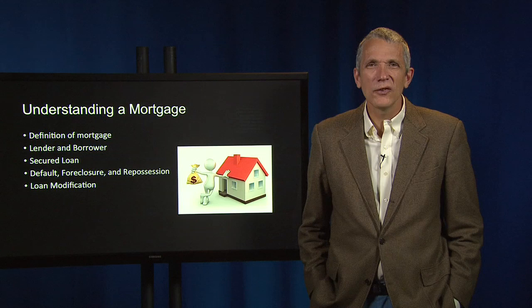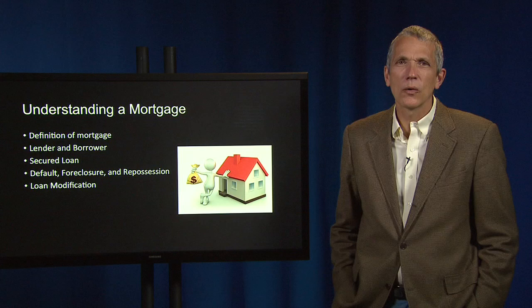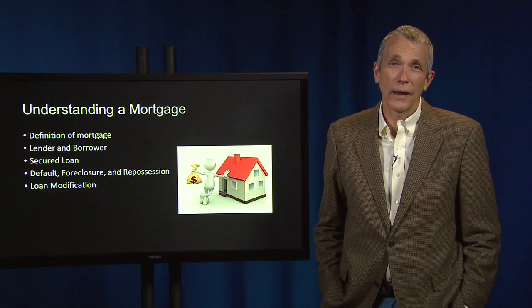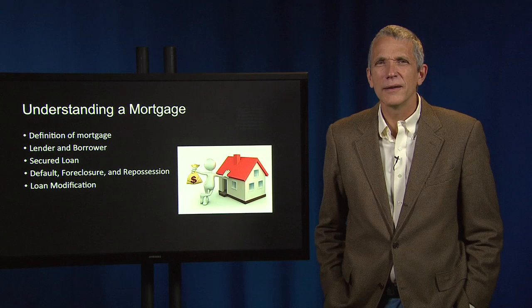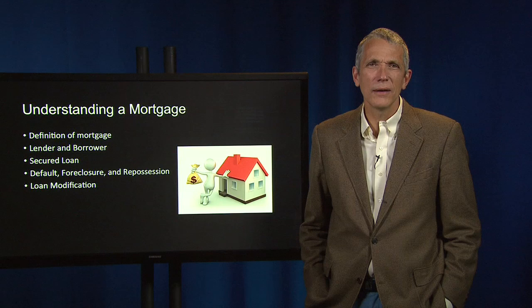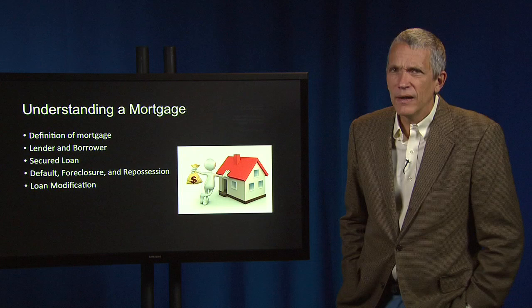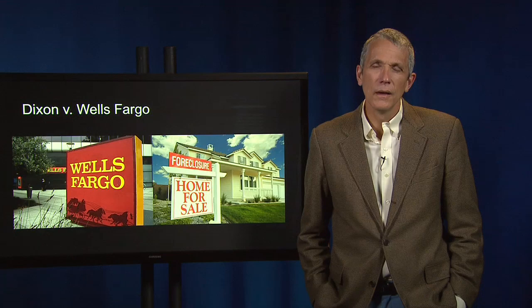When functioning properly, mortgages are essential to the well-being of the economy and the real estate market. However, things sometimes go awry. During the subprime mortgage crisis, which contributed to the U.S. and world recession from 2007 through 2009, a large decline in home prices caused a large number of homeowners to default and led to massive mortgage foreclosures. The effects rattled the U.S. and world economies and we're still feeling some of those effects today. The events in the Dixon case happened during this turbulent time in the U.S. economy.